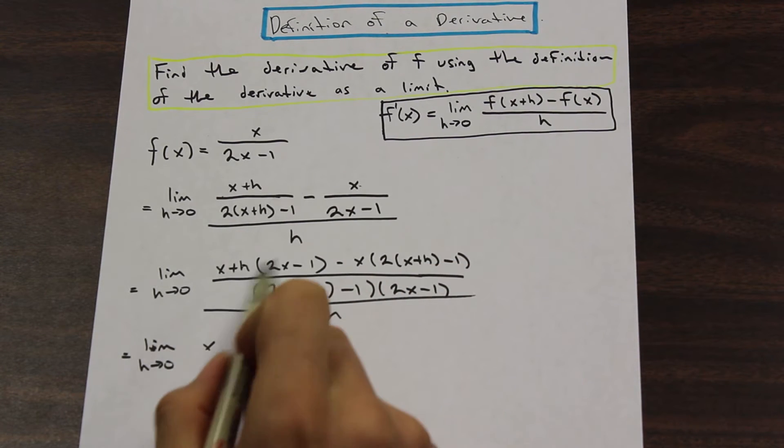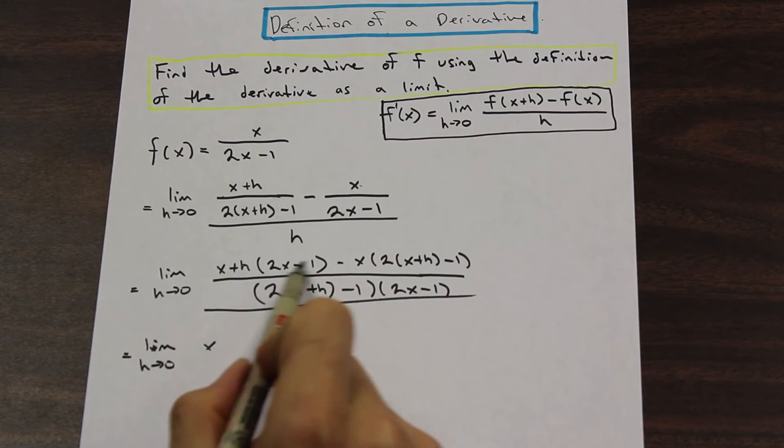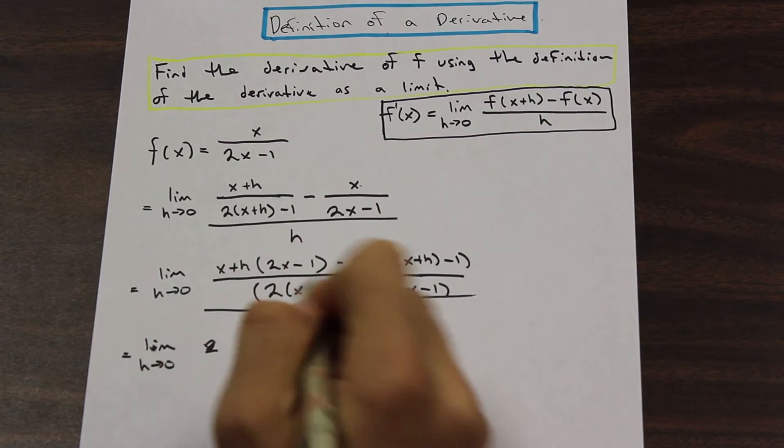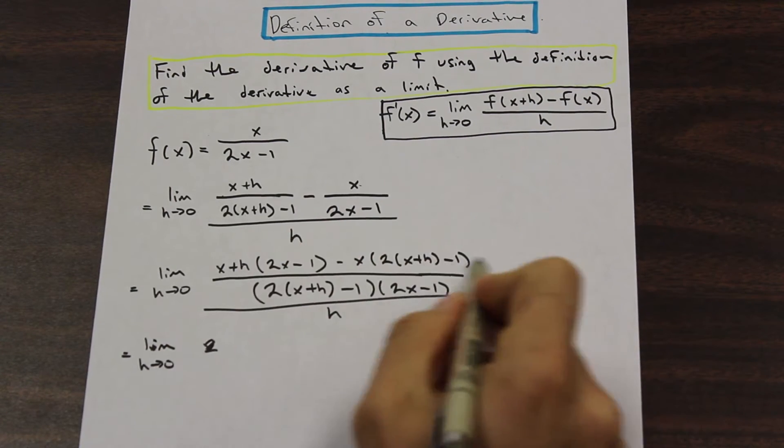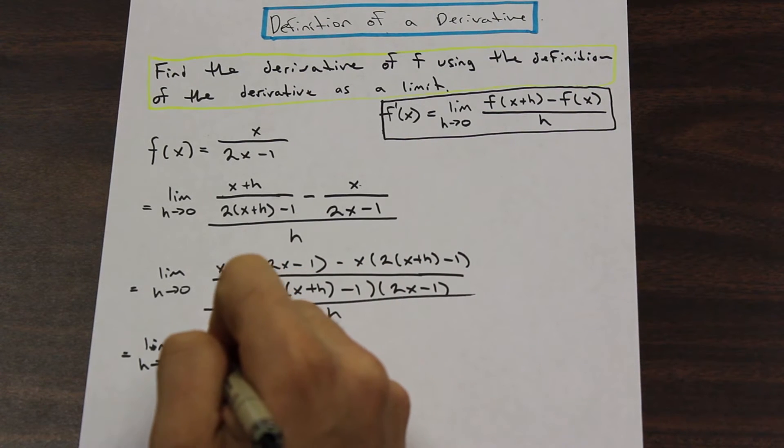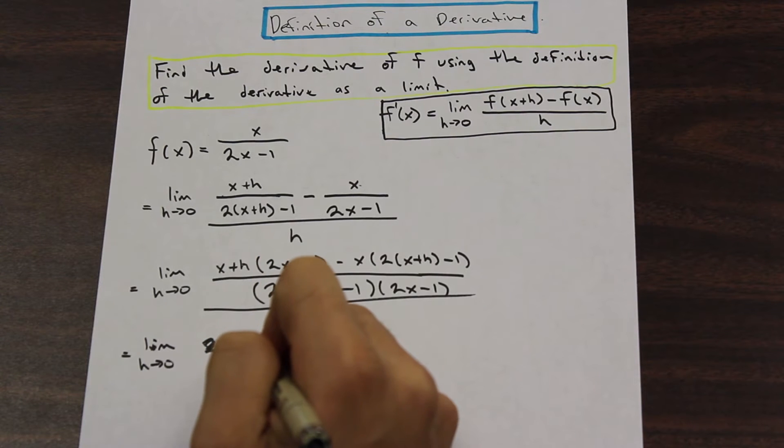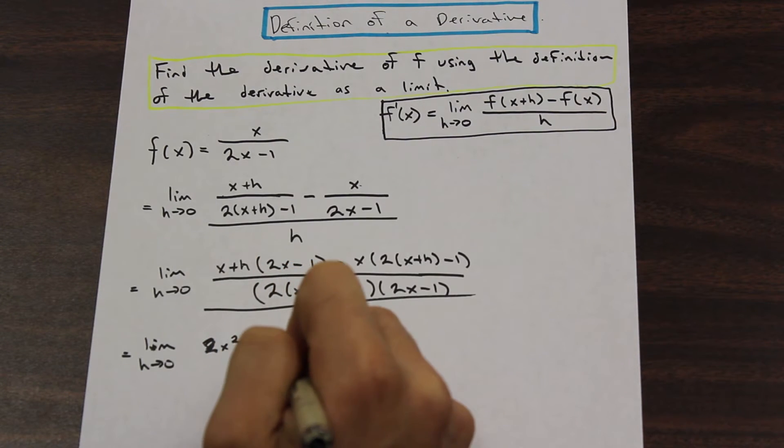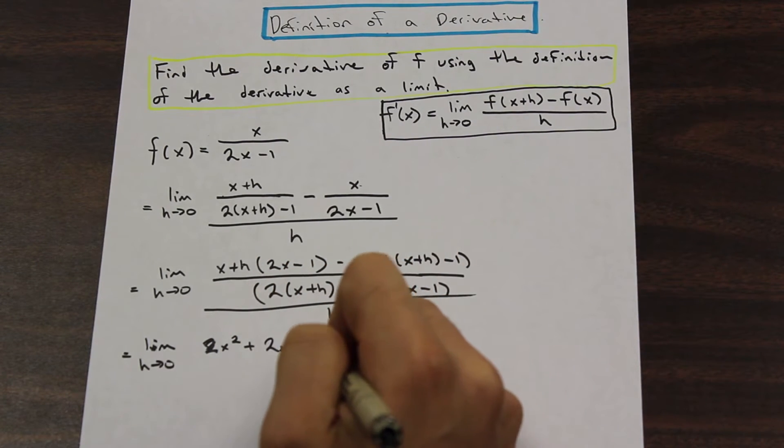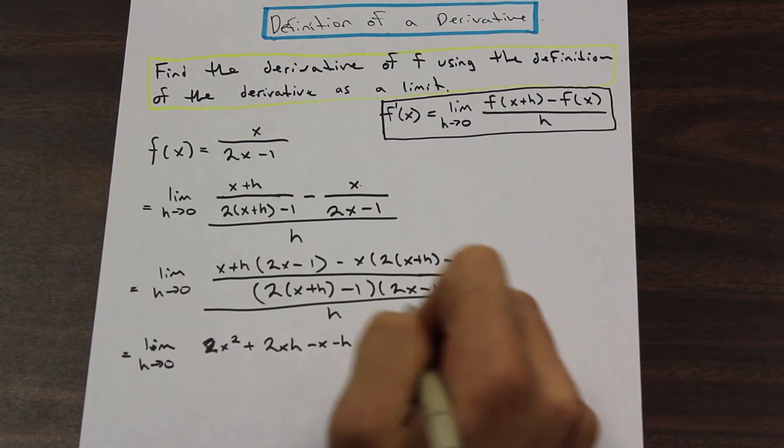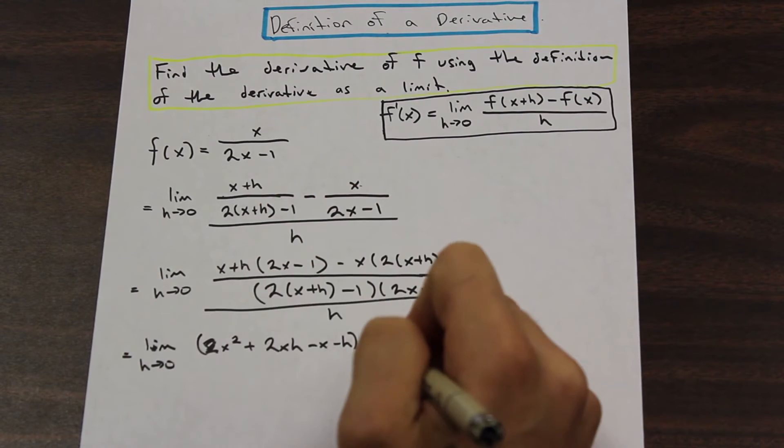So if we go ahead and just expand this out here, we should end up with, I'm not going to do every step. I'll just write out the expansion for this. 2x squared plus 2xh minus x minus h. That's the first term expanded.